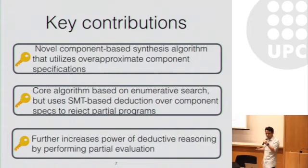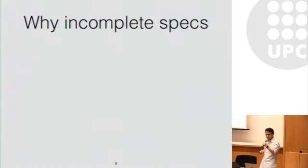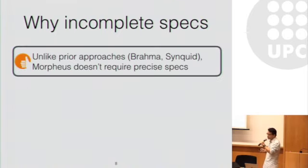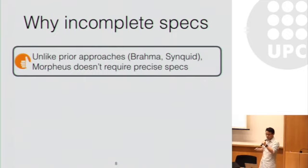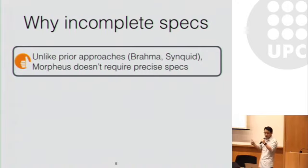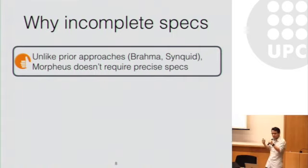At this point, you might have heard of the term SMT deduction in other synthesis work. Here I want to highlight one key difference between our tool and previous work. Unlike previous work like Brannard and Syncric, which use precise specification for each component — precise in the sense that given arbitrary components and input, the specification should be precise enough to determine the output — whereas in Morpheus, it can leverage an arbitrary kind of specification.